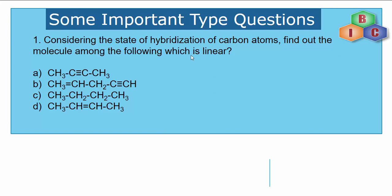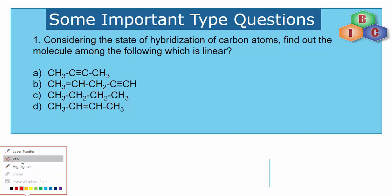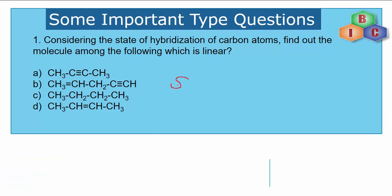Let's quickly recollect which type of hybridization leads to the formation of a linear molecule. It is sp hybridization — molecules that have undergone sp hybridization result in a linear molecule with a bond angle of 180 degrees. If it is sp3, it is tetrahedral; if it is sp2, it is trigonal planar; and if it is sp, it is linear.